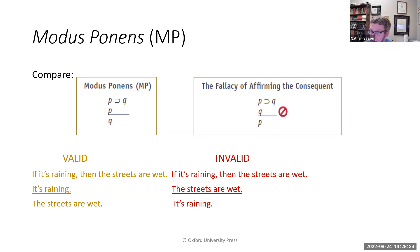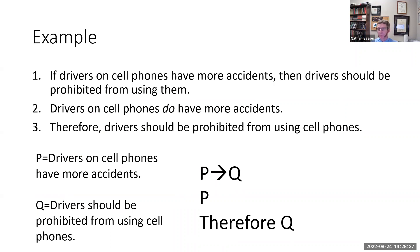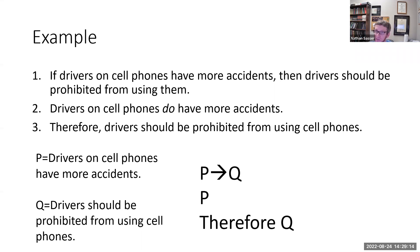Here's a natural language example of a valid modus ponens argument: 'If drivers on cell phones have more accidents, then drivers should be prohibited from using them.' That's our conditional — if P, then Q. Second premise: 'Drivers on cell phones do have more accidents' — the antecedent is true. Therefore, the consequent follows: 'Drivers should be prohibited from using cell phones.' Regardless of whether these premises are actually true, any argument with this form is logically valid. Even if it's not sound, it's at least valid.